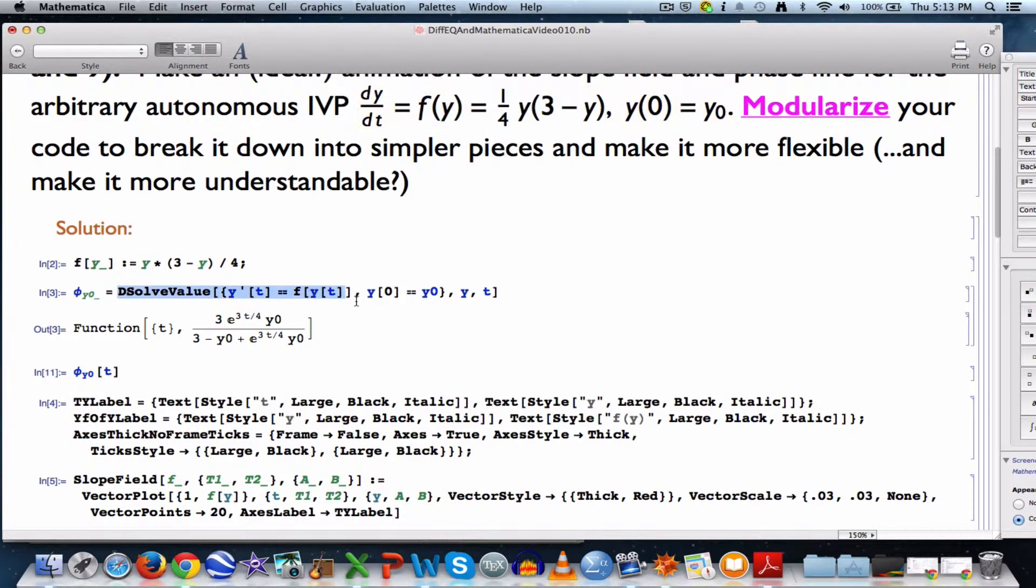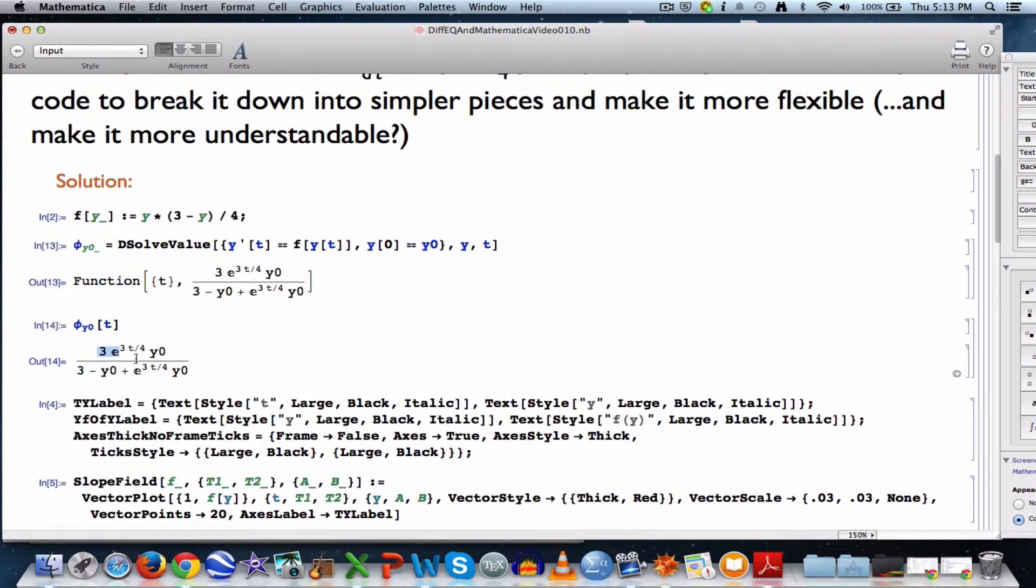D-solve value, as we've seen before, returns solutions to differential equations and initial value problems. If you just have a y here instead of a y of t, it returns the solution as what's called a pure function. I'm storing that pure function in this symbol. It does depend on y0, which is the initial value of y, so I put a y0 with an underscore there. Once you've entered that code, you can evaluate the pure function at the value of t. You can see the formula for the solution. That's the formula for the solution. It defines the solution function.